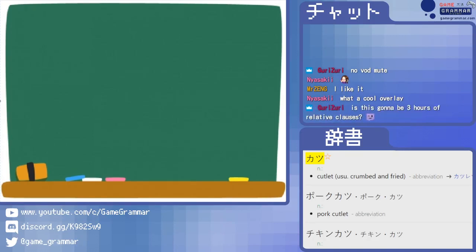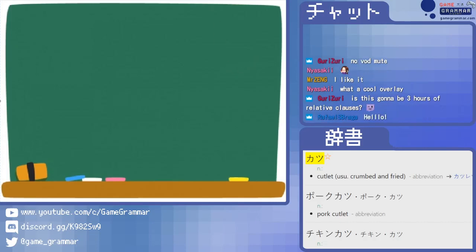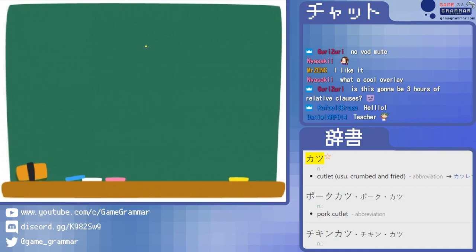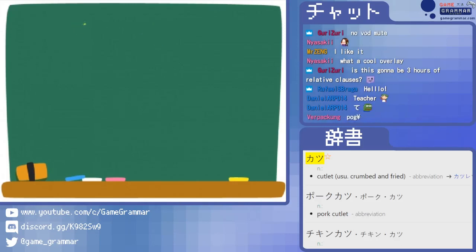I'm thinking this is gonna be about one hour. I'm open for suggestions, but my plan was to start with a little review of te-kudaru and te-ageru and then go into maybe some verb conjugations in general, because I think verb conjugations are always a big topic.